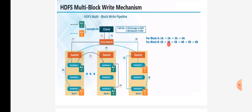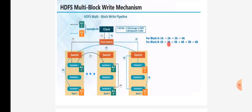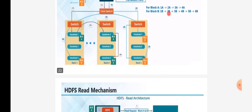For block A the steps are 1A, 2A, 3A, 4A. For block B the steps are 1B, 2B, 3B, 4B, 5B, and 6B. Steps 1A and 1B execute parallelly, 2A and 2B execute parallelly, 3A and 3B execute parallelly, and 4A and 4B execute parallelly. The executions do not go serially — block A and block B are processed simultaneously. This is how the multi-block write mechanism works.